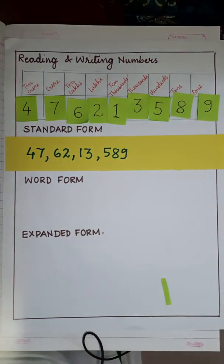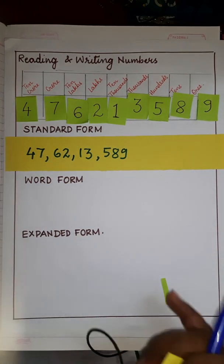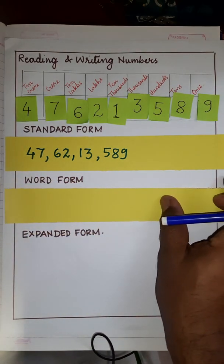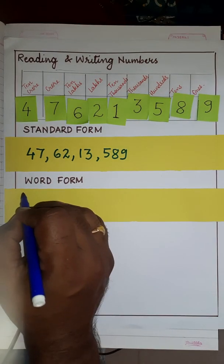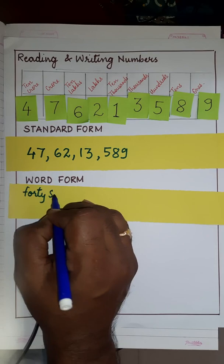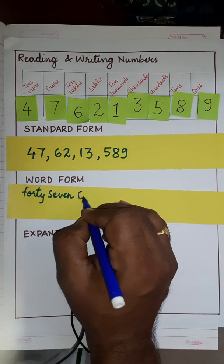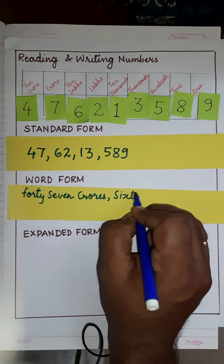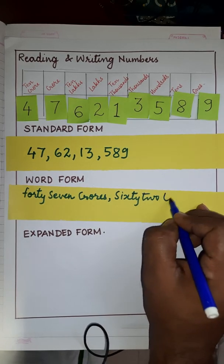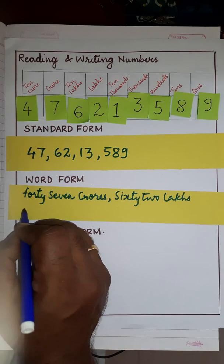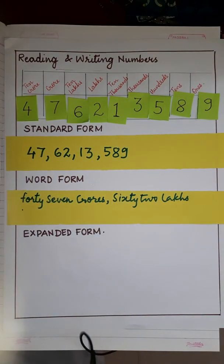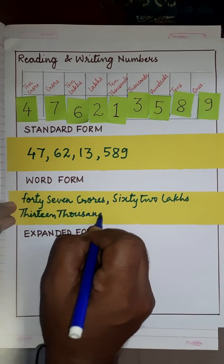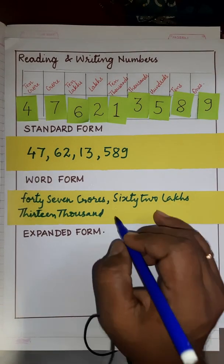This is how we write its standard form. Now, when you are asked to write the word form, the word form will be writing in spelling. That is 47 crores, comma, 62 lakhs, comma, 13 thousand, 589.